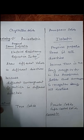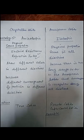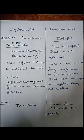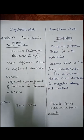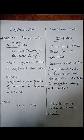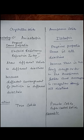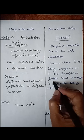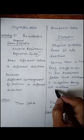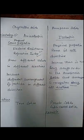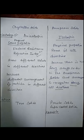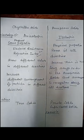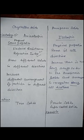In amorphous solids, they are isotropic — physical properties are the same in all directions. This is because there is no long range order in amorphous solids and the arrangement is irregular, so the average number of particles along all directions remains the same and physical properties are same throughout all directions.